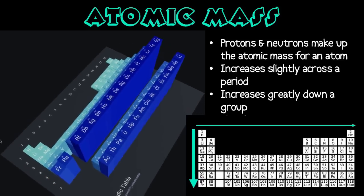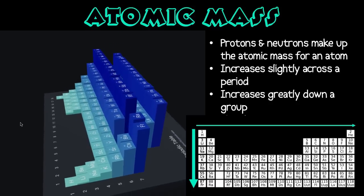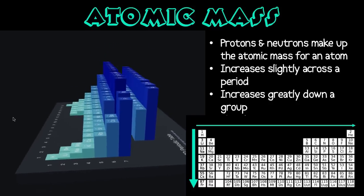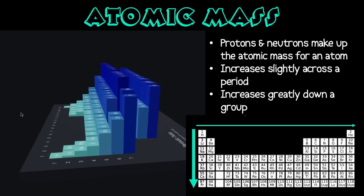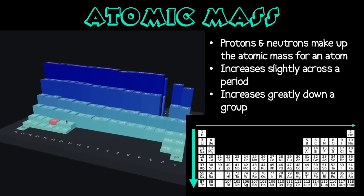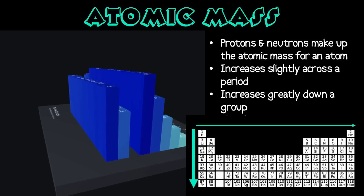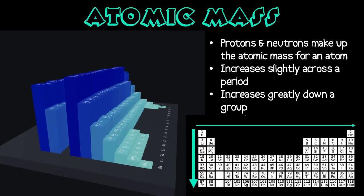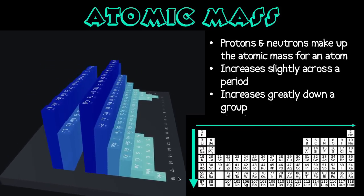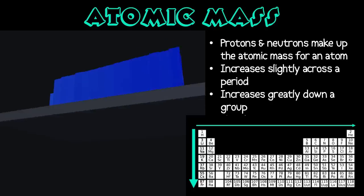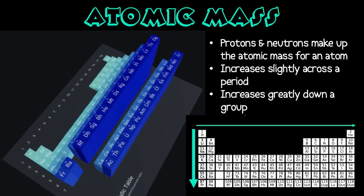Atomic mass is the mass of an atom in atomic mass units, and the mass is made up of the mass of the protons and neutrons in the nucleus. We don't count the electrons because their mass is so small it's essentially insignificant. Atomic mass increases slightly across a period but even more significantly down a group, which makes sense as the atomic mass number, the number of protons and neutrons, also increases.